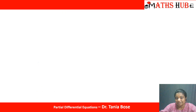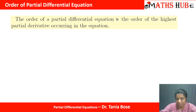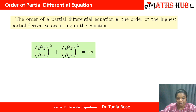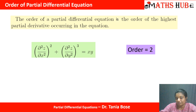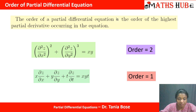Now let us understand key terms about PDEs. The order of a partial differential equation is the order of the highest partial derivative occurring in the equation — the same definition as in ODEs. In the first example, both derivatives are second order, so the order is 2. In the second example, all three derivatives are first order, so the order is 1.